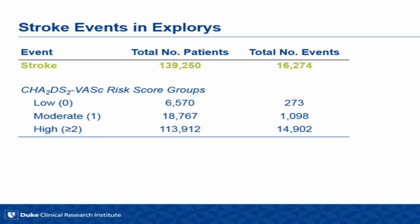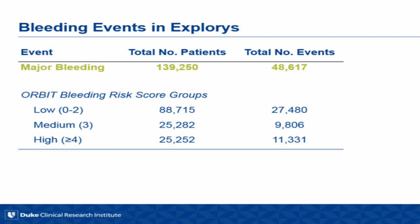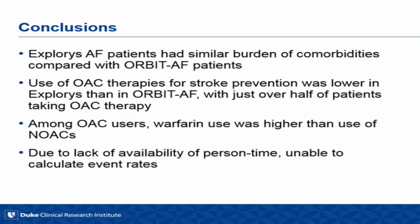For stroke events, this was a challenge. Due to the lack of information about death and censoring, we didn't feel comfortable calculating person-time for the denominator, so we didn't calculate event rates. But we did look at the total proportion of patients who experienced a stroke event — about 16,000 patients in Explorys — and this tracked pretty consistently with what we would expect based on CHADS-VASc score. Similarly with major bleeding, about 48,000 patients out of the 140,000 experienced a major bleeding event over a median time from confirmatory diagnosis to last encounter of about four years. In conclusion, we were struck by the comparability of the comorbidity distribution. Lower use of antithrombotic or anticoagulant therapies in Explorys compared with ORBIT. Just over half of patients were taking OAC in Explorys. Warfarin use was higher among all OAC users compared with NOACs. We were not able to calculate event rates due to the lack of person-time.